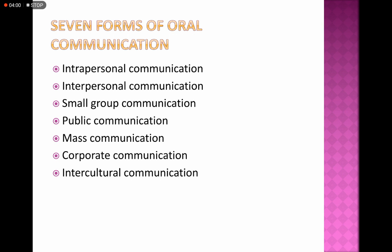Mass communication takes place when a huge number of people are involved, usually through platforms like television, print media, and radio. Corporate communication is the formal kind of communication that takes place in an organization. Intercultural communication occurs when people belonging to two different cultural backgrounds — or even the same background — communicate with each other.